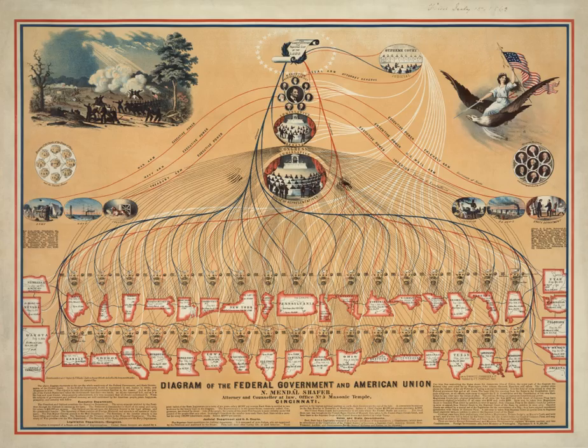Residents of U.S. territories have varying rights. For example, only some residents of Puerto Rico pay federal income taxes, though all residents must pay all other federal taxes, including import-export taxes, federal commodity taxes and federal payroll taxes, including Social Security and Medicare. All federal laws that are not locally inapplicable are automatically the law of the land in Puerto Rico, but their current representation in the U.S. Congress is in the form of a resident commissioner, a non-voting delegate.